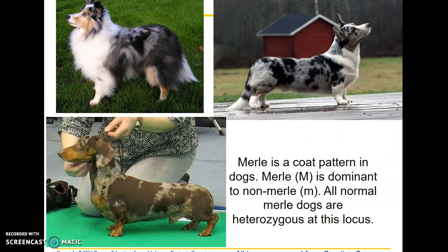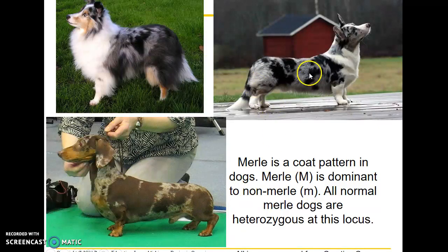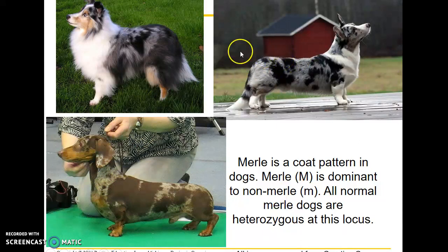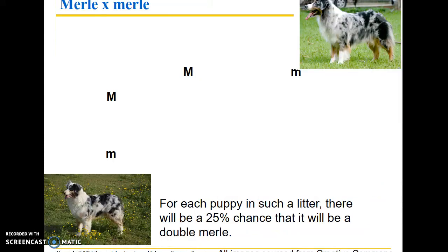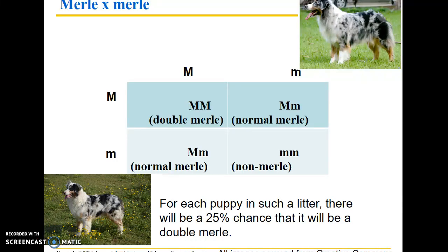Finally, here's an interesting example in dogs. Merle is a coat pattern denoted by the dominant allele M, dominant over non-merle. Merle produces a background of white with a base color like gray or tan-red and spots over that. All normal merle dogs shown here are heterozygous at this locus.